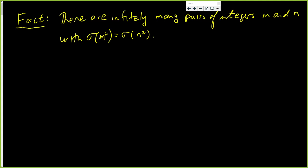In this video, we're going to prove that there are infinitely many pairs of integers m and n with sigma of m squared being equal to sigma of n squared. If you like seeing mathematical proofs, you should consider subscribing to my channel.